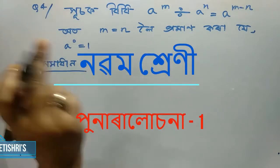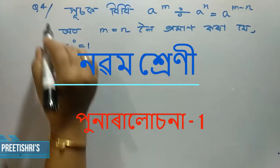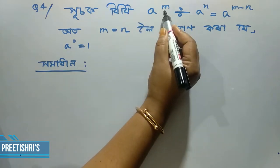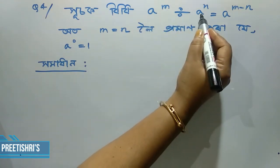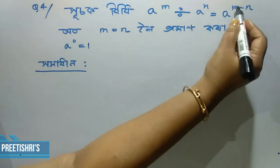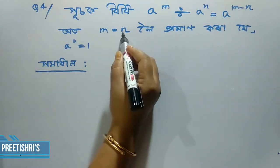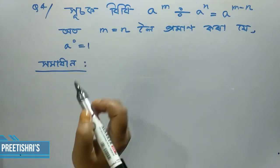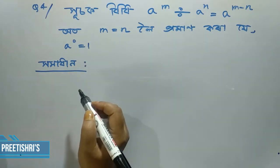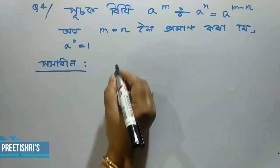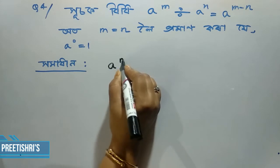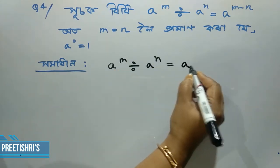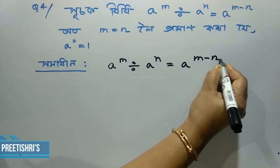Class 9 revision 1 lesson — we are looking at the sign number question. The rule is: a to the power m divided by a to the power n equal to a to the power m minus n. When m equal to n, we can show that a to the power naught equal to 1. We already know the rule: a to the power m divided by a to the power n equal to a to the power m minus n.